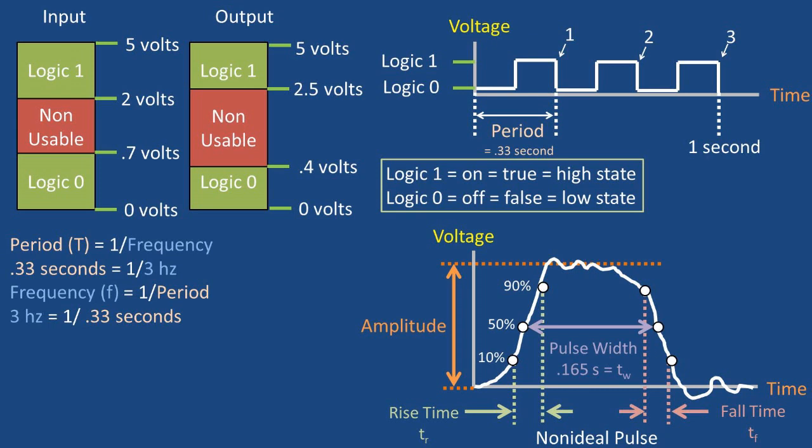Next, we have the pulse width, which is the time it takes to go from 50% of the voltage of the amplitude at the leading edge to 50% of the voltage of the amplitude at the falling edge. In this example, we will be using a pulse width of 0.165 seconds.